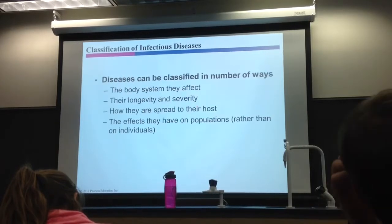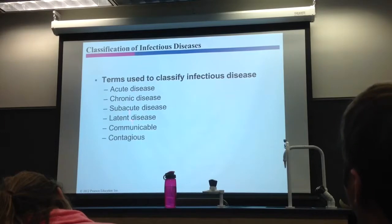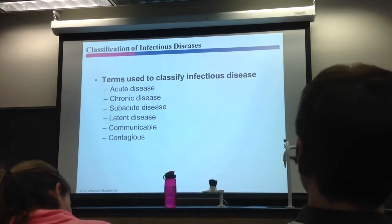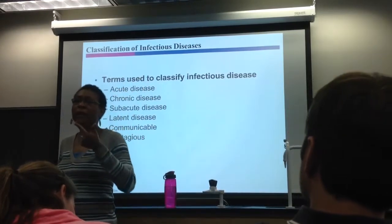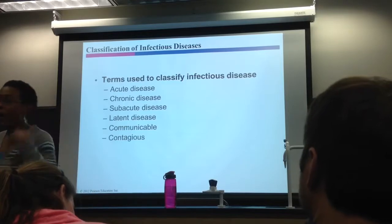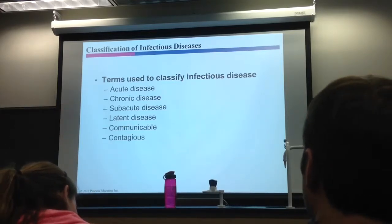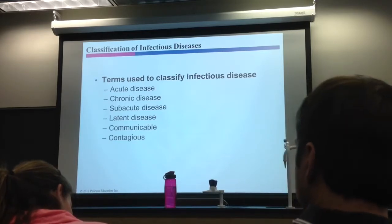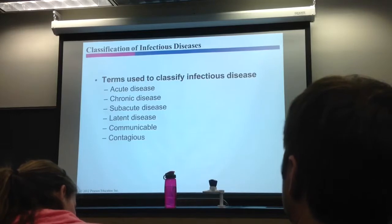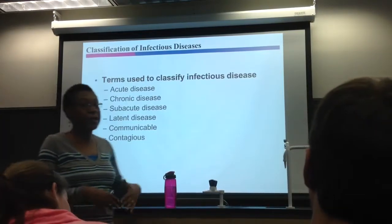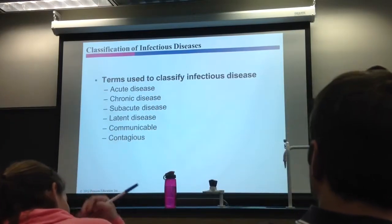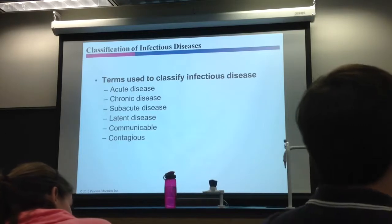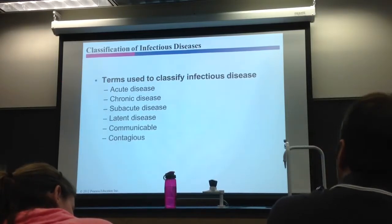In terms of longevity and severity: what's an acute disease? An acute disease happens fast — you get your symptoms real quick. The symptoms are typically severe, like a quick onset of diarrhea or vomiting, but after a day or two it's all done. Short incubation period, quick onset, severe but over quickly. Think foodborne diseases, or even the common cold.